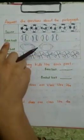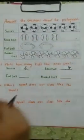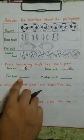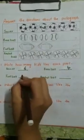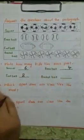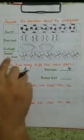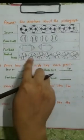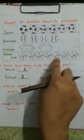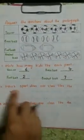Baseball: counting 1, 2, 3, 4 — 4 like baseball. Football: 1, 2 — only 2 like football. Basketball: 1, 2, 3, 4, 5, 6, 7 — 7 like basketball.